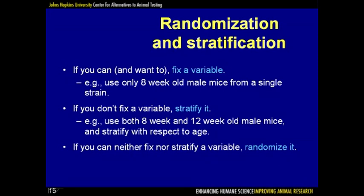To summarize randomization and stratification: if we want to and are able to, we can fix a variable — for example, studying only 8-week-old male mice from a single strain. This reduces uncontrolled variation but limits what we learn. If we don't fix a variable that may be associated with the response, it's best to stratify on it — ensuring equal numbers in each treatment group within each level. For all other things we neither fix nor stratify, we randomize to ensure balance and avoid bias.